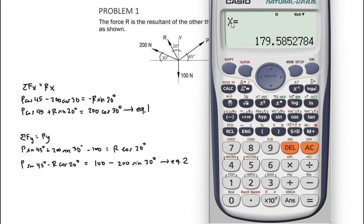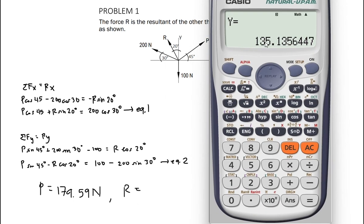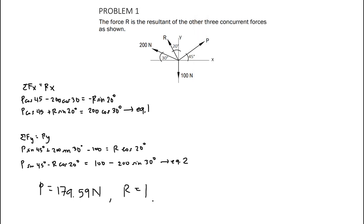And we get our answer. X represents the first variable P, which is equal to 179.59, so P is equal to 179.59 newtons. And R is equal to 135.14. Since the results are positive, this means that P and R are directed as shown in the figure. If we should have a negative result, then it means that R or P acts in the opposite direction as shown in the figure.